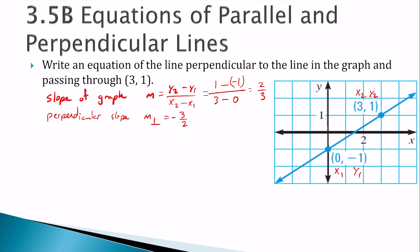And I need some point. I know my point is 3, 1. So I know my x would be 3 and my y would be 1. So if y equals mx plus b, the y is 1. I'm using the perpendicular slope, so negative 3 over 2, and x is 3.